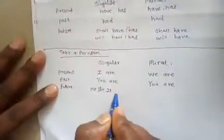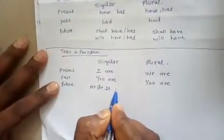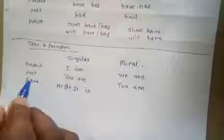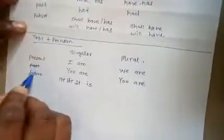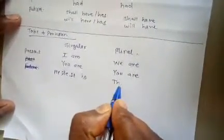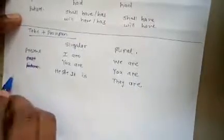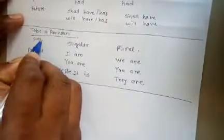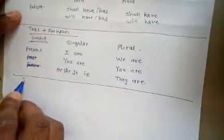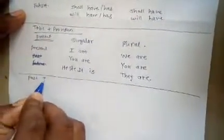Past tense: U is U. He is, she is, it is. It will. He is present. And here they are. To be present.